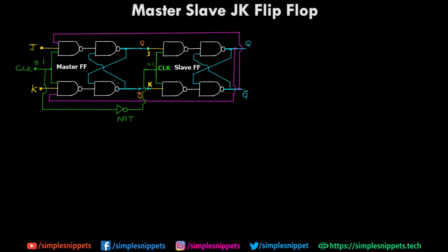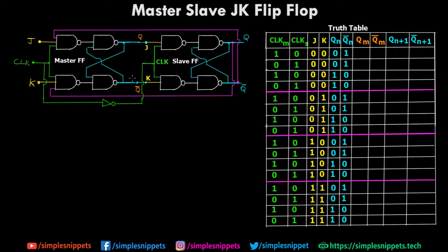That is the complete structure of the master slave flip-flop — the circuit diagram is now complete. Let's move on to the truth table. As you can see on the screen there's a large truth table, but it's going to be very easy. There are 16 different sub-cases for which we are going to calculate the intermediate output, that is qm and q bar m — these are the intermediate outputs coming from the first master flip-flop.